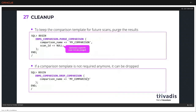At the end, you can clean up the comparison. You have two ways: you can purge all scans for one specific comparison, leaving the comparison as a template for future scans. Or you can purge a specific scan by providing the root scan ID. When you provide NULL, all scans are purged. If you no longer need this comparison template, you can completely drop it.